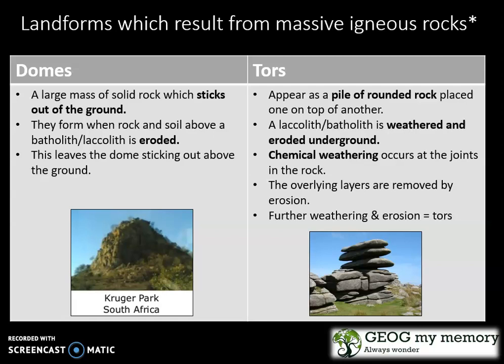Tors appear as a pile of rounded rock placed one on top of another. A laccolith, or batholith, is weathered and eroded underground. Chemical weathering occurs at the joints in the rock. The overlying layers are removed by erosion, and further weathering and erosion therefore creates the tors.